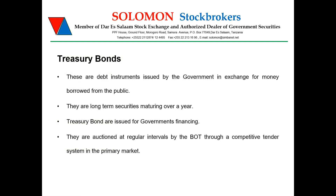Now let's take a look into treasury bonds. In contrast to treasury bills, treasury bonds mature in more than one year. As mentioned earlier, these have longer tenures of 2 to 20 years. Treasury bonds are also auctioned at regular intervals of two weeks. So in simple terms, if this week the Bank of Tanzania is issuing a treasury bill, then the next week it will be issuing a treasury bond, and the cycle continues as such.